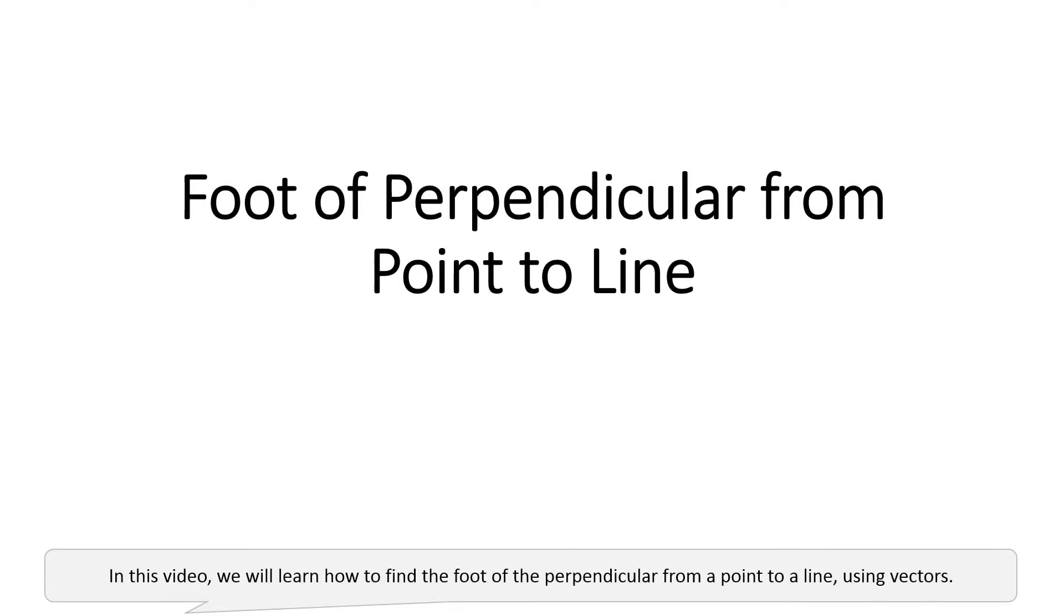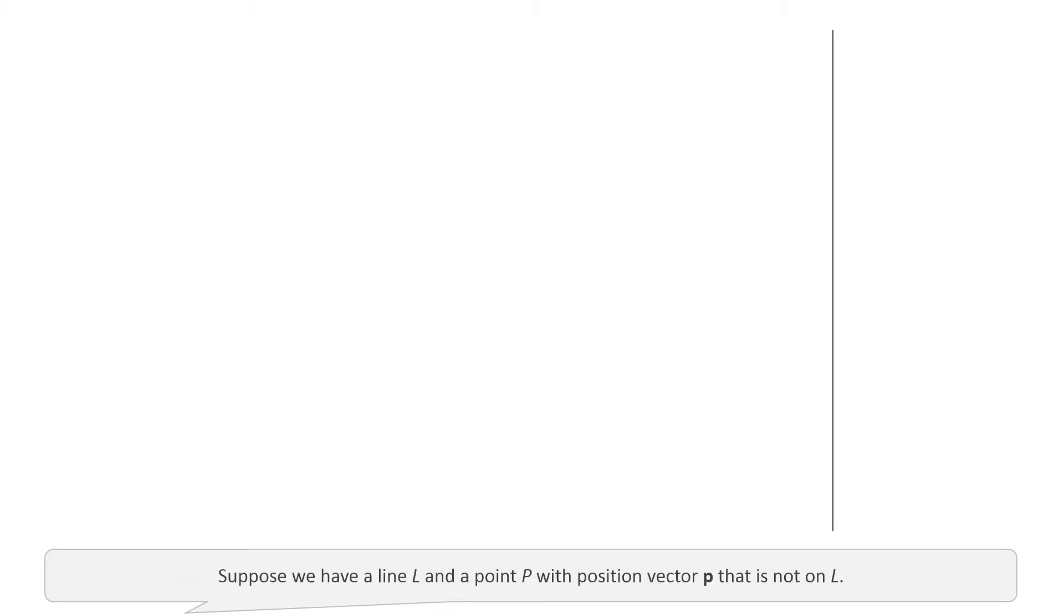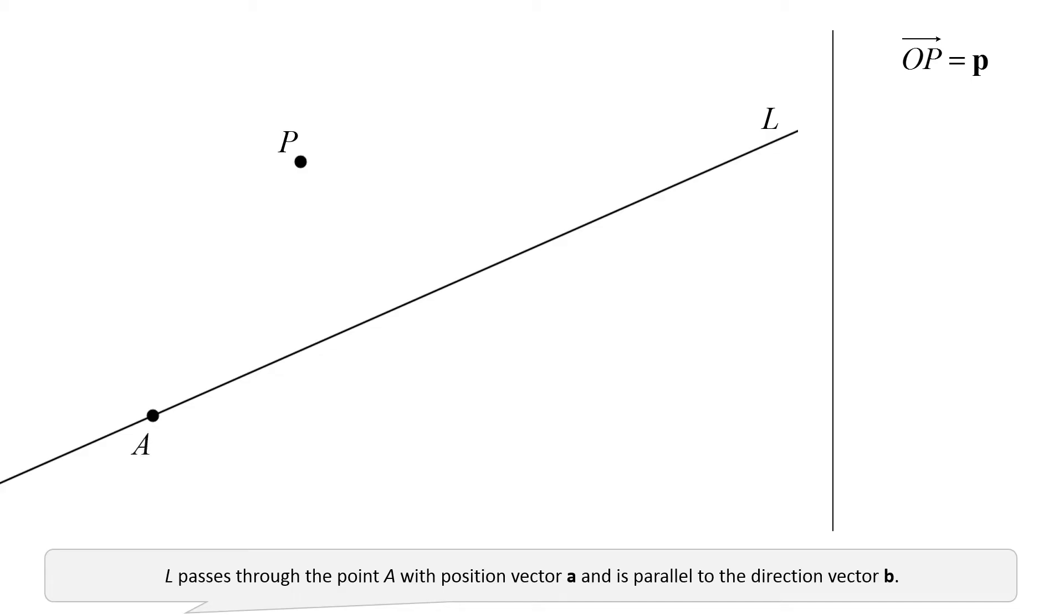In this video, we will learn how to find the foot of the perpendicular from a point to a line using vectors. Suppose we have a line L and a point P with position vector P that is not on L. L passes through the point A with position vector A and is parallel to the direction vector B.